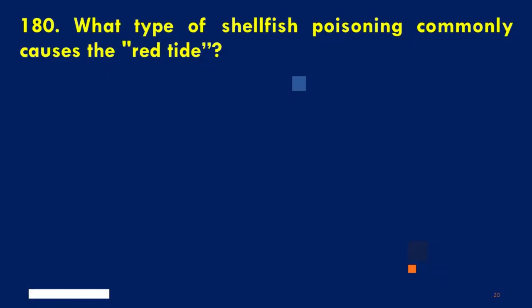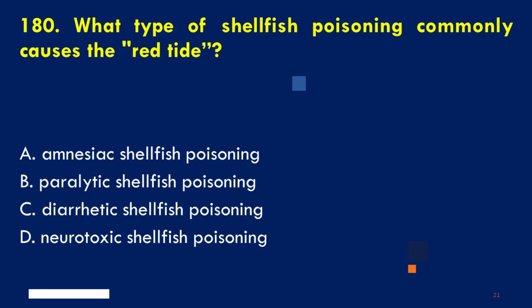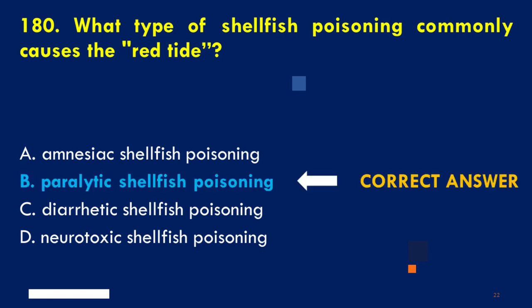What type of shellfish poisoning commonly causes the red tide? A. Amnesiac shellfish poisoning, B. Paralytic shellfish poisoning, C. Diarrhetic shellfish poisoning, D. Neurotoxic shellfish poisoning. The correct answer is B. Paralytic shellfish poisoning.